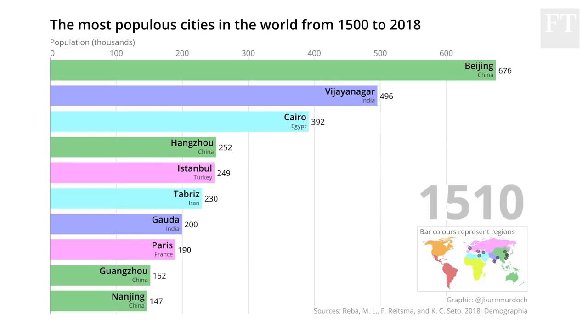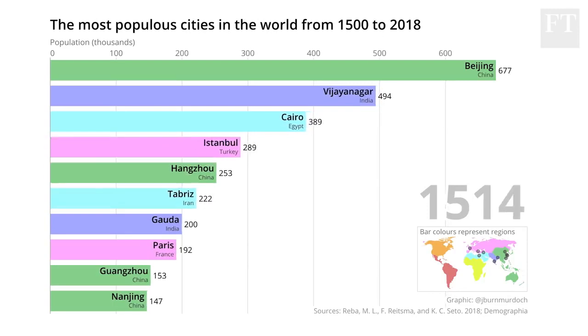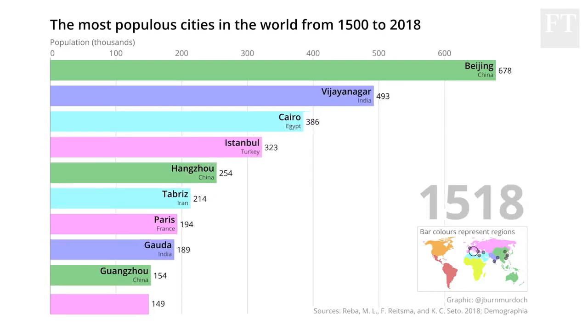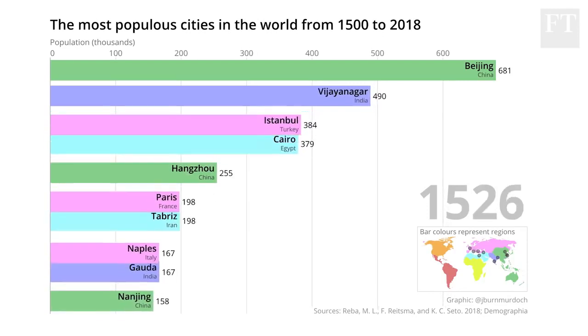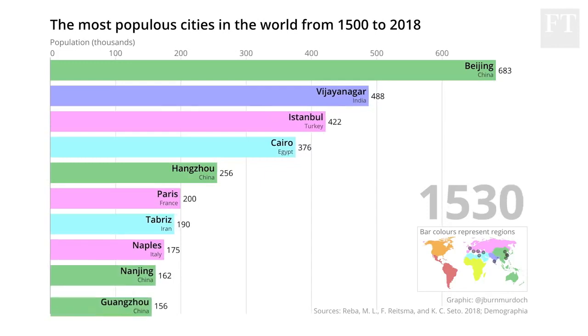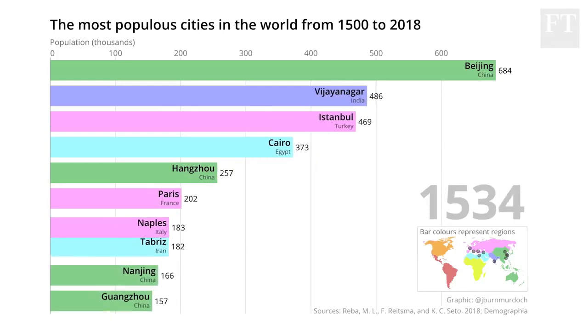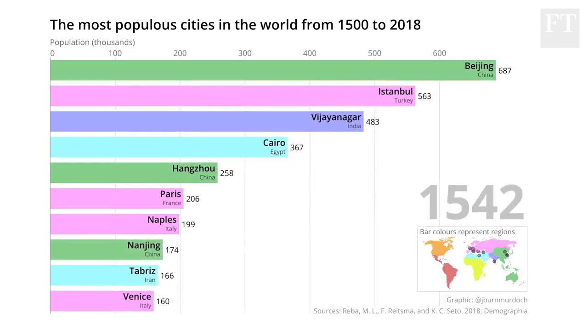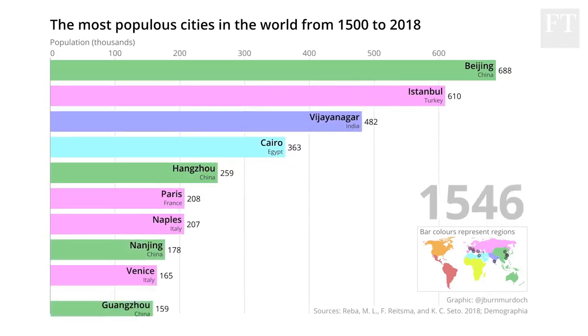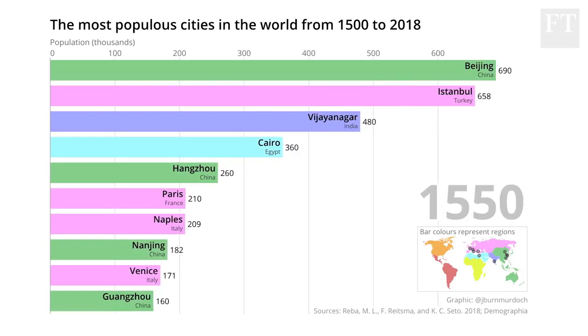In the early 1500s most people lived in the east, either the east of Europe and North Africa, or the east of the world itself in India and China — two countries that will be a regular recurring feature as we go on.